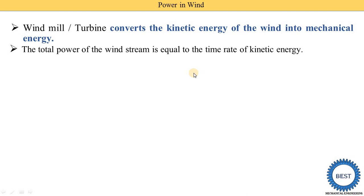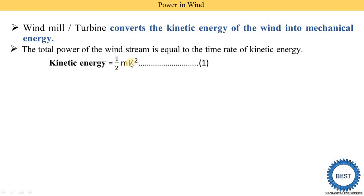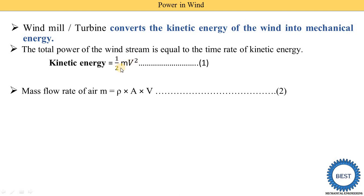The total power of the wind stream is equal to the kinetic energy. The basic equation for kinetic energy is: KE = ½mv², where m is the mass of the wind and v is the velocity of the wind. This is the standard equation for kinetic energy.